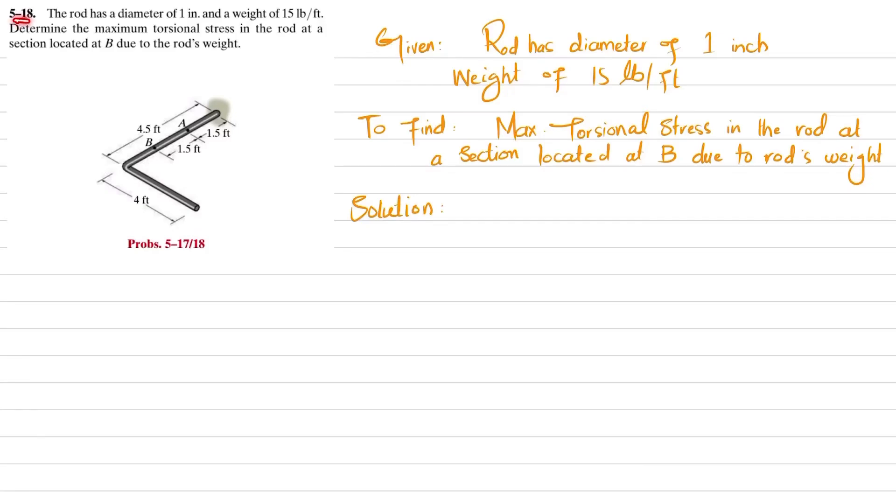Welcome back to Problem 5-18. This problem is the same as 5-17. The statement is: the rod has a diameter of 1 inch and a weight of 15 pounds per foot. Determine the maximum torsional stress in the rod at section located at B.